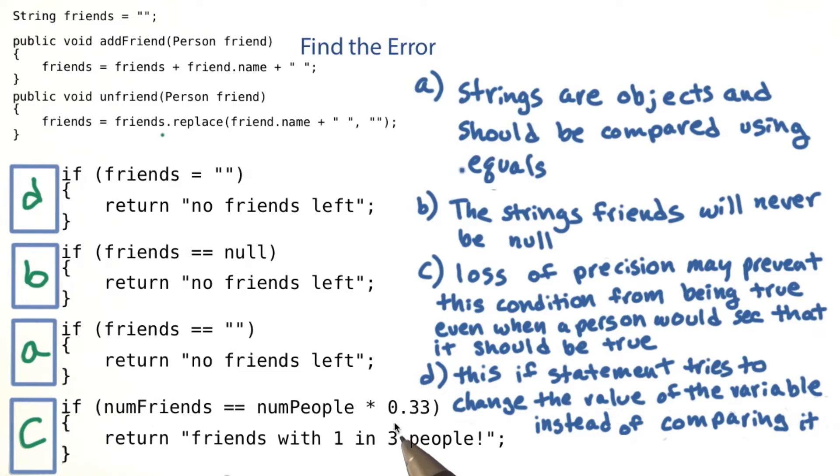So you could actually find out that num friends equals num people times 0.33333 or 0.339 or something like that, and this wouldn't be true, even though that person is basically friends with 1 in 3 people.